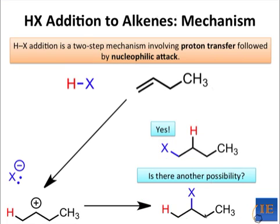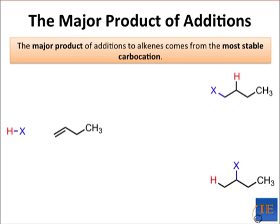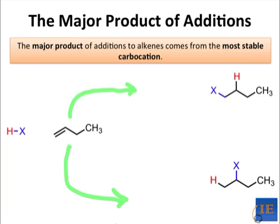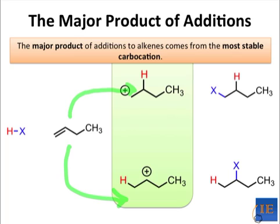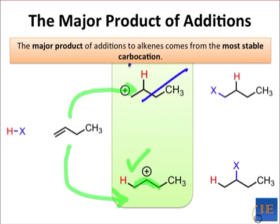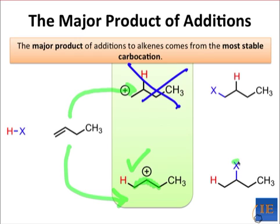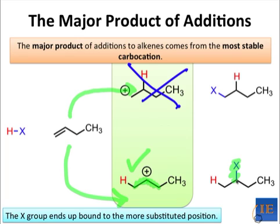Because addition to alkenes is a two-step process, the stability of the intermediate is a critical factor in the likelihood of the reaction pathway. In this case, the stability of the intermediate carbocation is the main factor that controls the distribution of products. The more substituted cation — that is, the one with more bonds from the positively charged atom to other carbons — must be more stable than the less substituted one. This implies that, as a rule, the X-group will end up on the more substituted position in the favored product. This is a general rule known as Markovnikov's rule: the X-group ends up bound to the more substituted position.